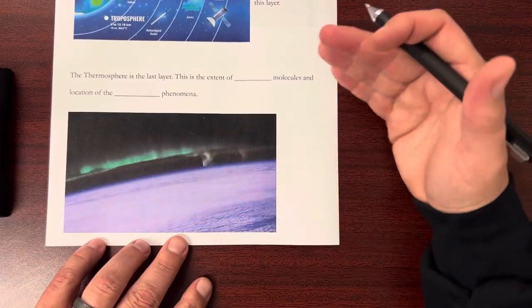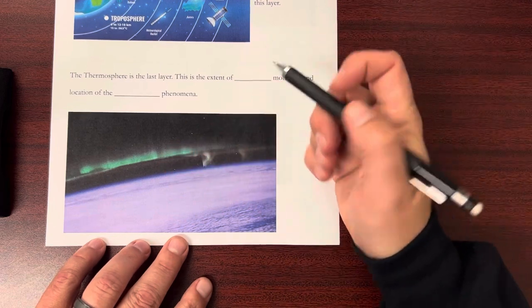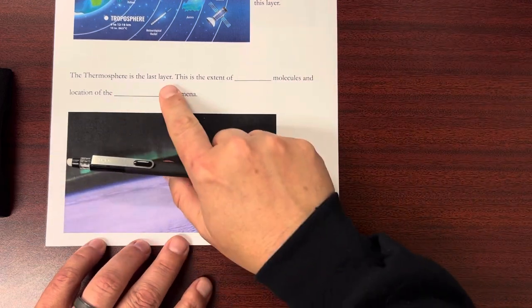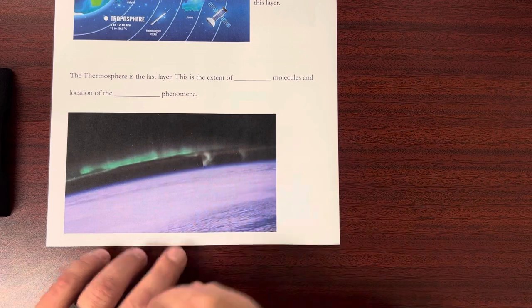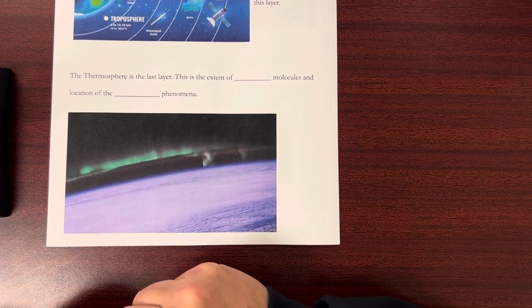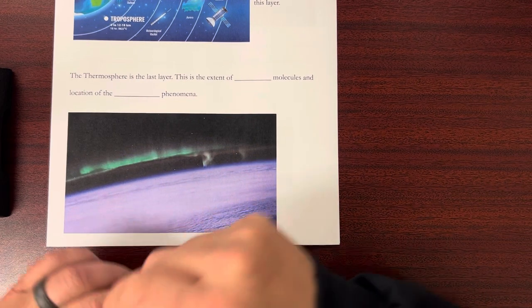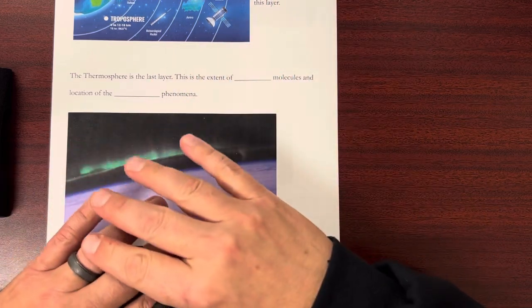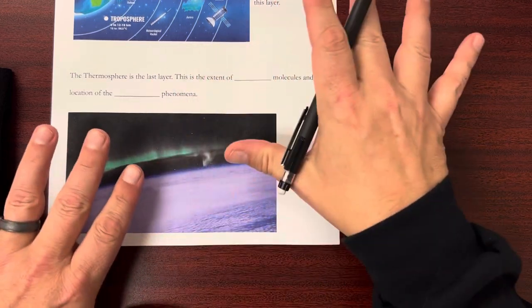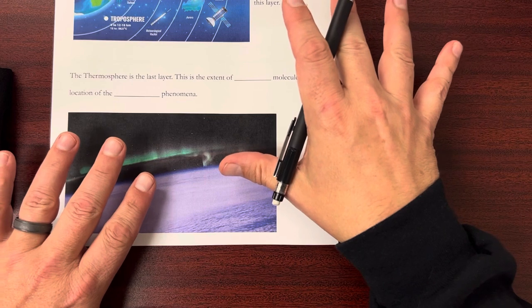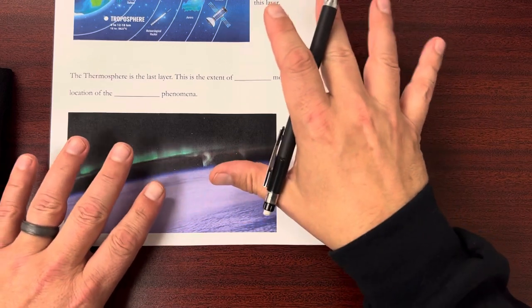And then going further away from the Earth, we have the thermosphere. This is the last layer. At this point, we're running out of gas molecules. It's not dense at all. There's a very spread out layer of gas molecules or air molecules at this point. This is the extent of gas molecules and the location of the aurora phenomena.